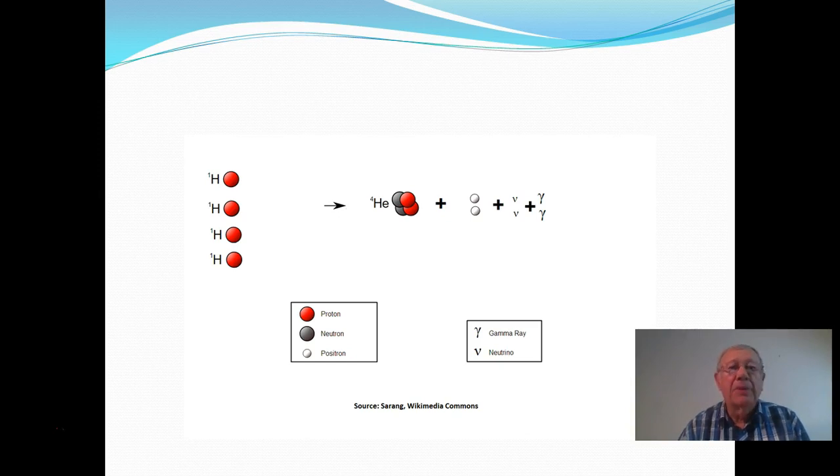What happens there is the mass, the extra mass, the missing mass, and that has a particular term. It's called the mass defect. That mass is turned or becomes energy.